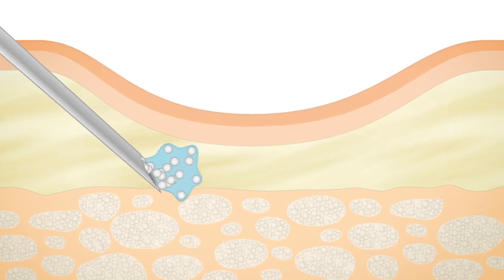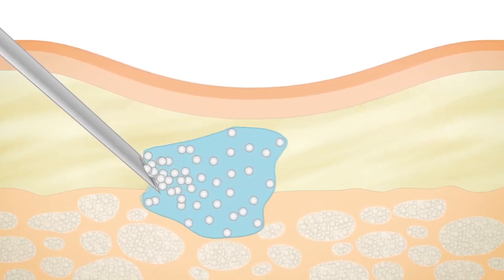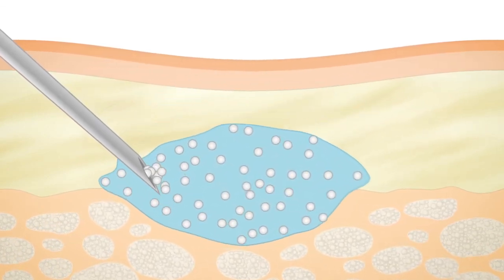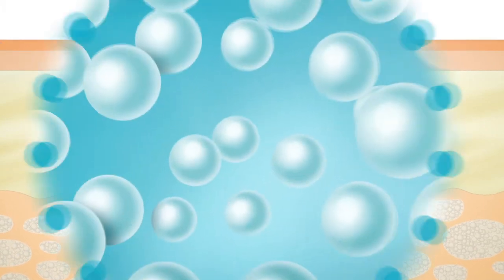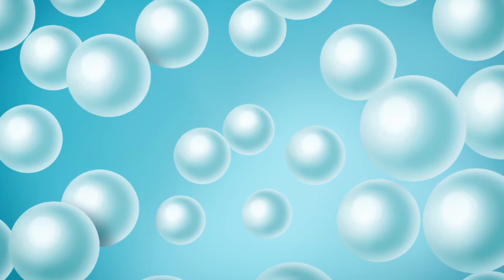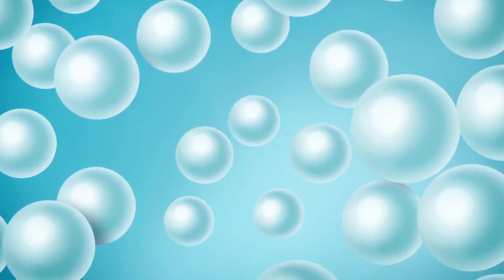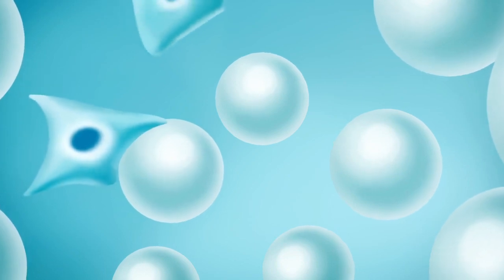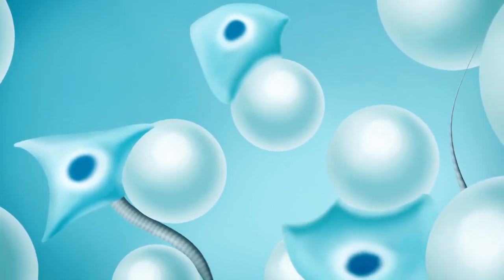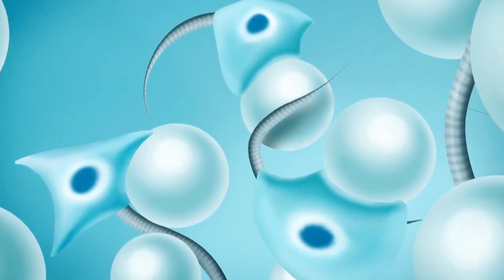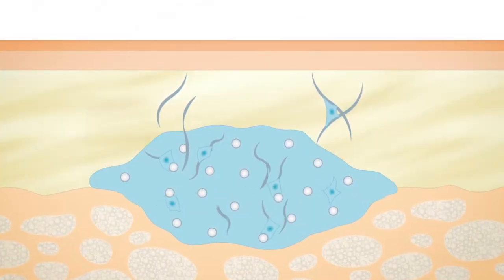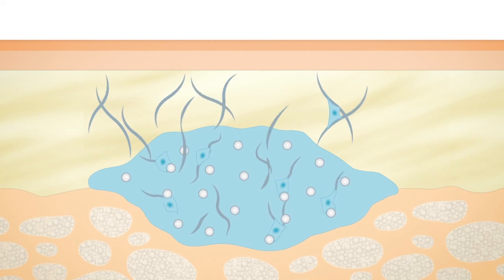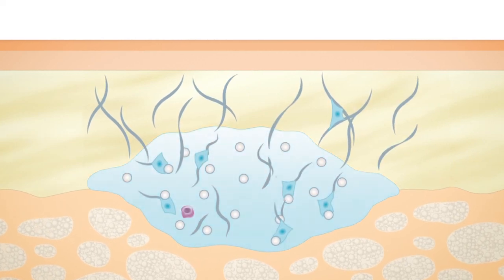The gel is injected directly into the deep dermis, where it shows an immediate filling effect and corrects the localized loss of volume. In addition, the microspheres serve as a scaffold. This supportive scaffold promotes fibroblast activity and helps to trigger collagen neogenesis. Over time, the newly produced collagen network strengthens the tissue connectivity in the dermis, and the gel carrier begins to degrade.